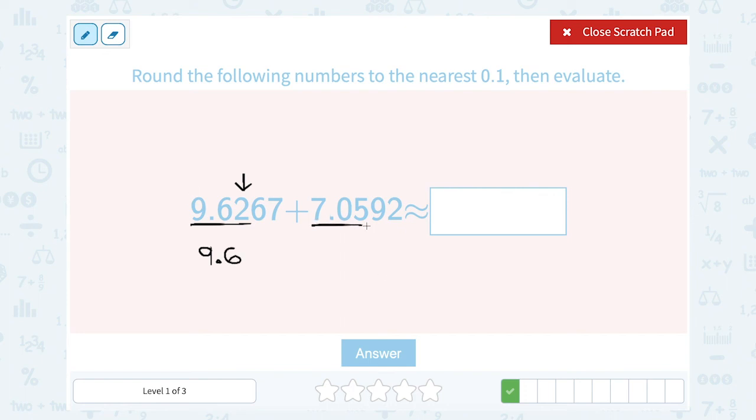Now in this case, 7.05, I'm going to say, okay, it's going to be 7 point. Now after the 0, that number is 5. Remember we said if it's 5 or higher, it rounds the next digit up. So that 0 is going to round up to a 1.